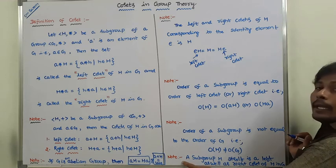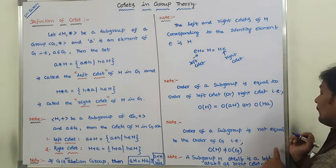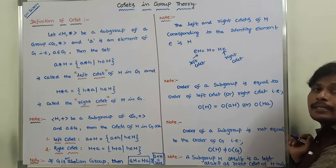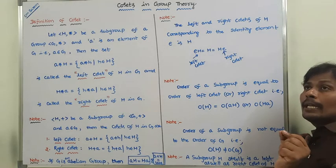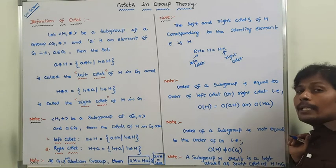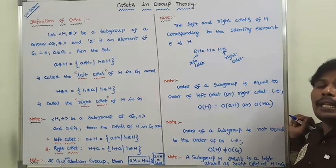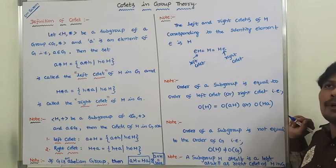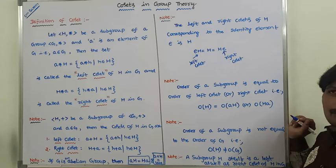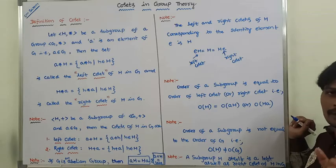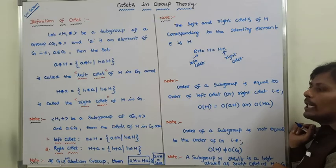The last property is: a subgroup H itself is a left coset as well as a right coset of H in G. That means a subgroup H is itself a left coset or a right coset of H in G. Suppose I am taking a subgroup H — the left coset for that subgroup is also a·H, and the right coset for subgroup H is also H·a in G. This is one more important property.